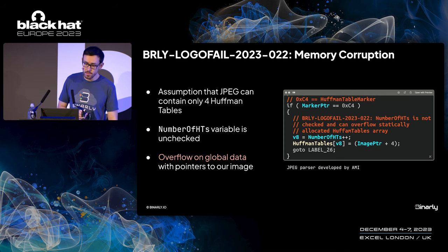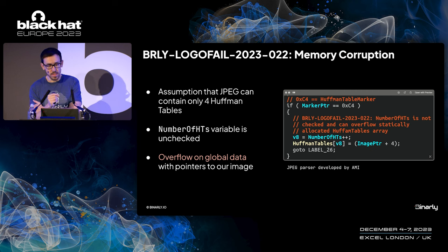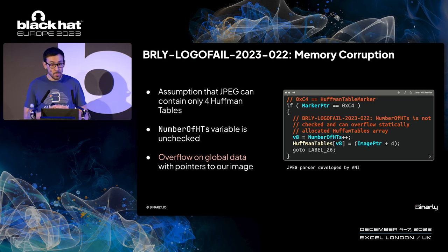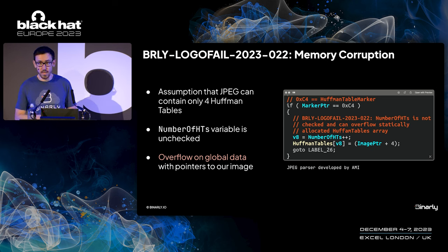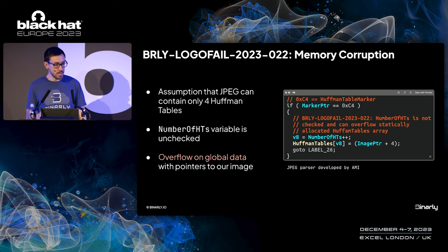The other bug was found in the JPEG parser developed by AMI. The developers assume a JPEG cannot contain more than four Huffman tables, so they allocate a fixed array. If you simply supply more than four Huffman tables, the index used to access the array is not checked and can exceed four, meaning we can overflow on global data with pointers to our image — which can become a serious problem.